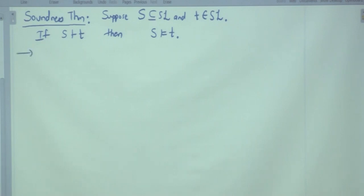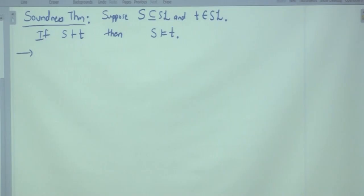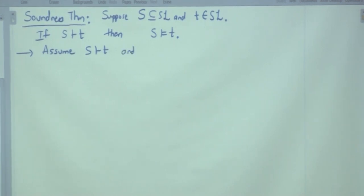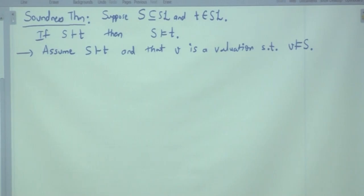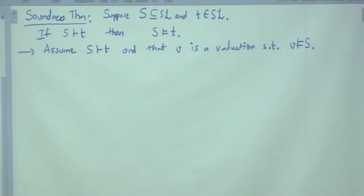The soundness theorem: suppose S ⊆ SL and T is a formula. If there is a proof of T from capital S, then T is a logical consequence of S — single turnstile implies double turnstile. We need to show that whenever a valuation V makes capital S true, that same valuation also makes T true. Assume there is a proof of T from S and that V is a valuation such that V is a model of S. V(S) is true means V(s) is true for all s in S.